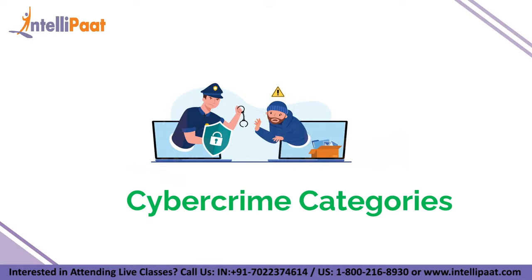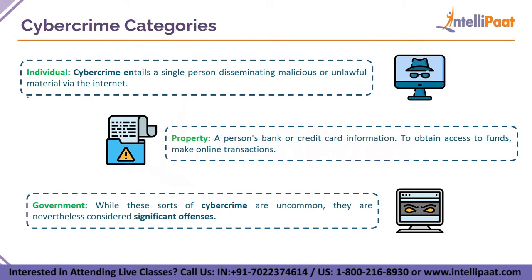Cybercrime has been broadly classified into three categories. The types of methods used and difficulty levels vary depending on the category. The first category is Individual cybercrime — this involves a single person disseminating malicious or illegal material through the internet. Human trafficking and online stalking are examples of individual cybercrime.